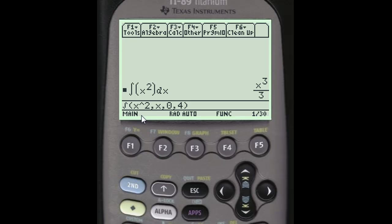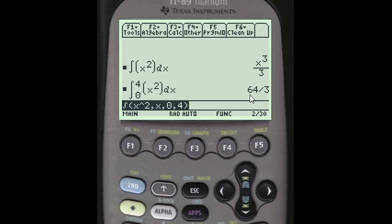So this says I want to integrate x squared with respect to x from 0 to 4. So now all I need to do is hit enter and there we go, we have 64 over 3.